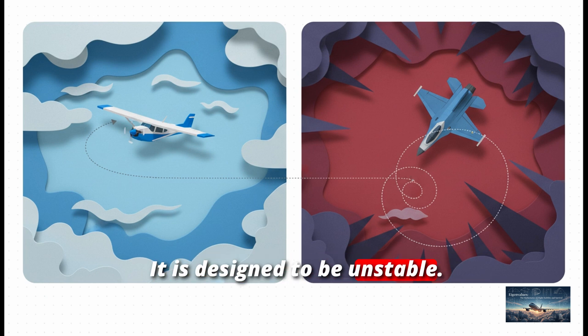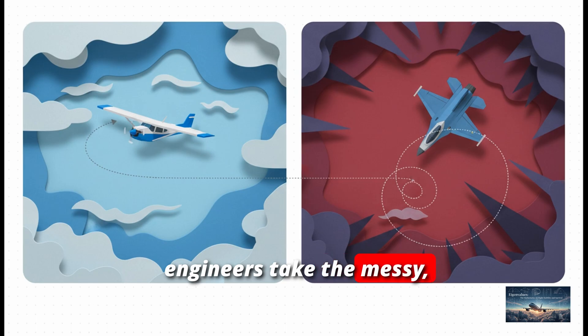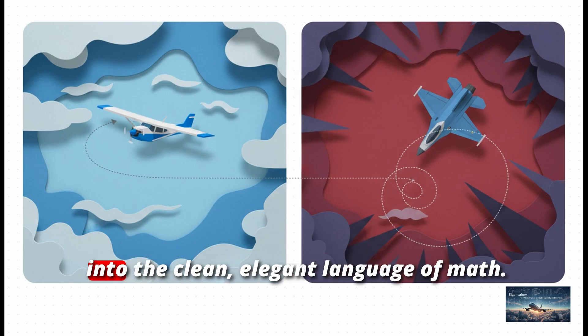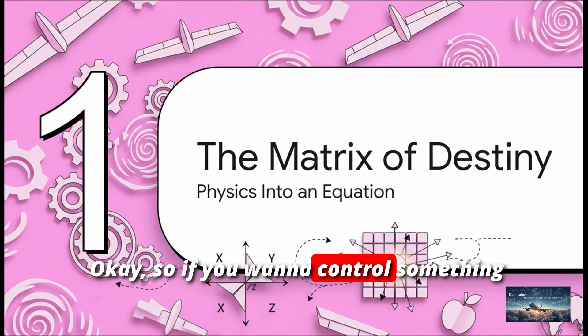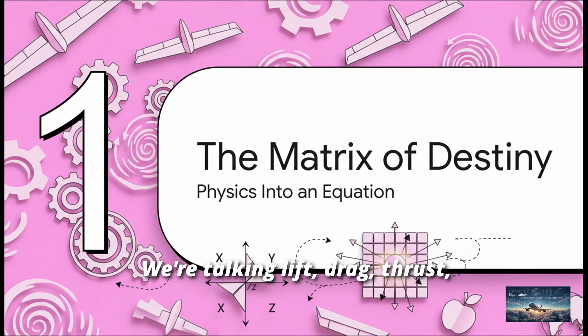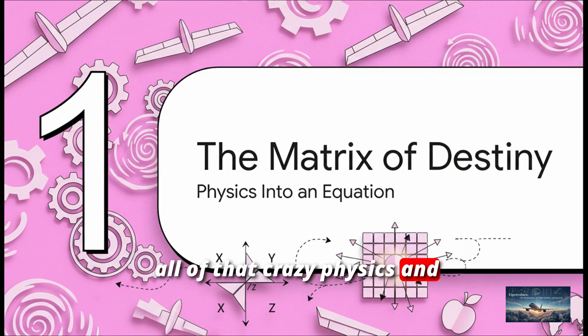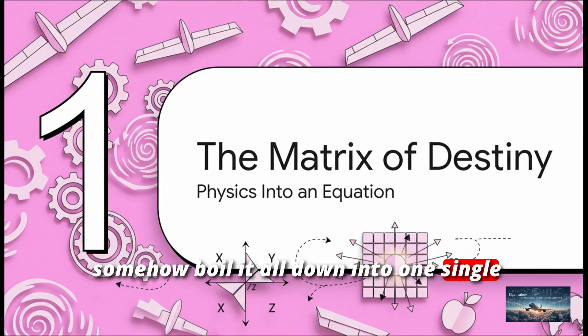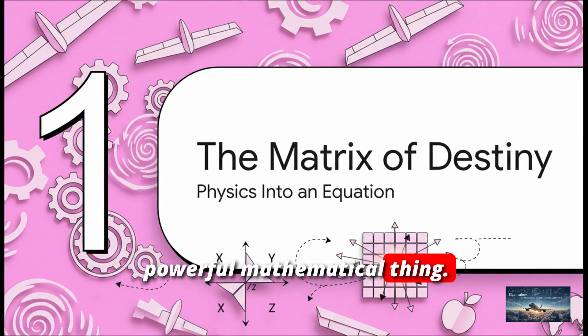To really get why, we need to see how engineers take the messy, chaotic forces of flight and turn them into the clean, elegant language of math. Okay, so if you want to control something as complex as an airplane, you have to capture every single force acting on it. We're talking lift, drag, thrust, gravity, all the twisting forces that make it roll and pitch. You have to take all of that crazy physics and somehow boil it all down into one single powerful mathematical thing.